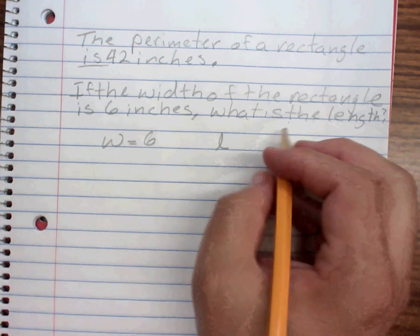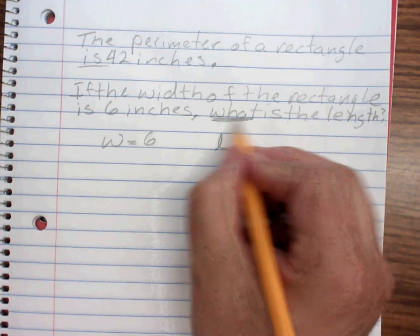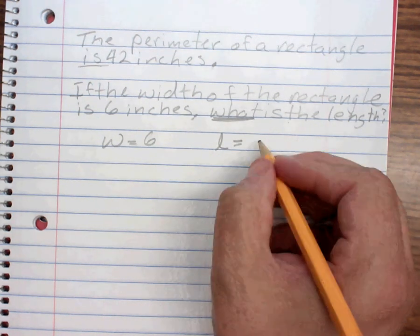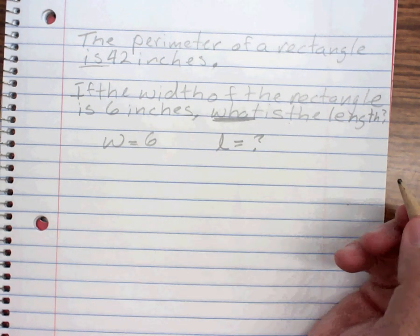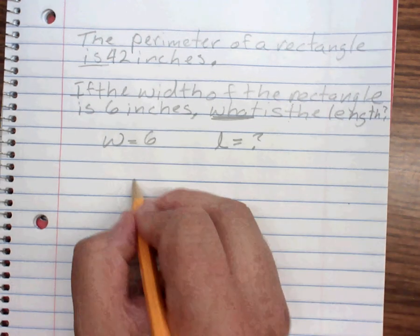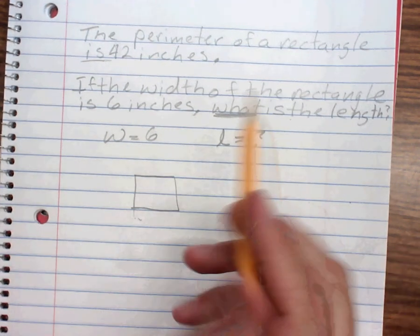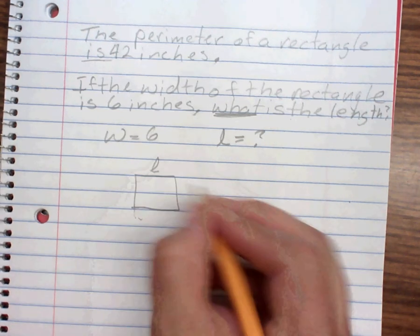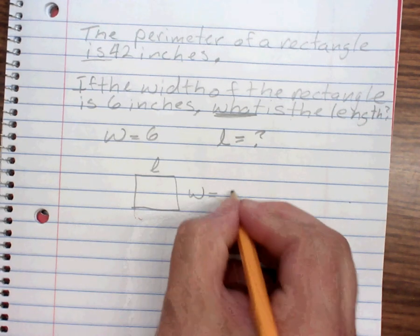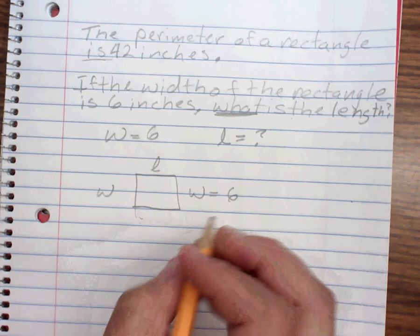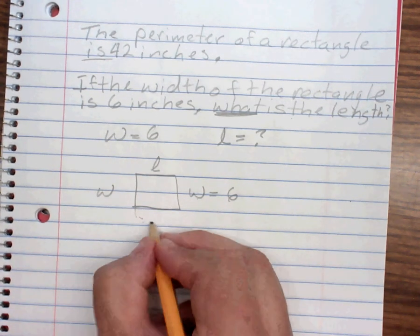So we don't know what the length is. In fact, we're asked what. Whenever you see the word what, you got to think, I don't know what it is. So it's a variable. Let's draw the picture. We have a rectangle, and it has a length and a width. I know that the width is 6, and this width is equal to this width and this length to this length.